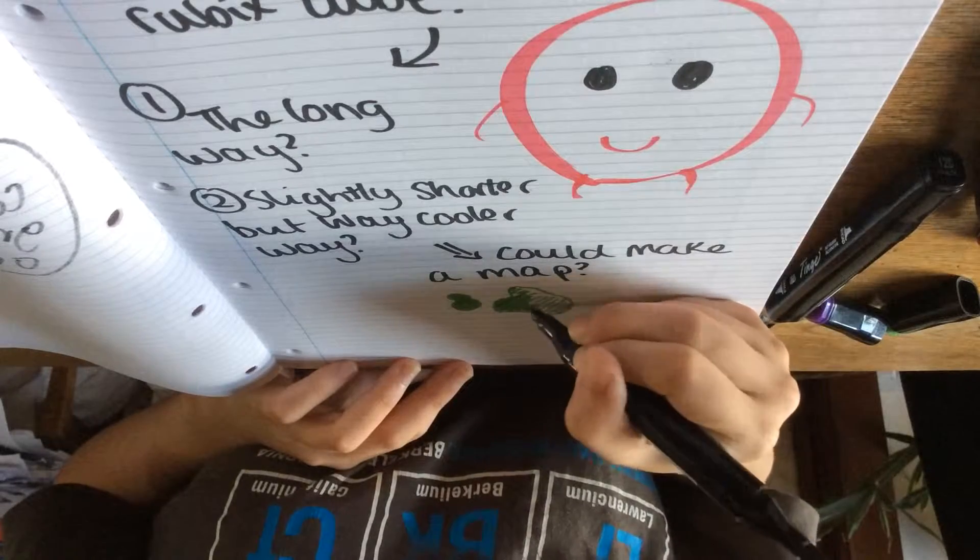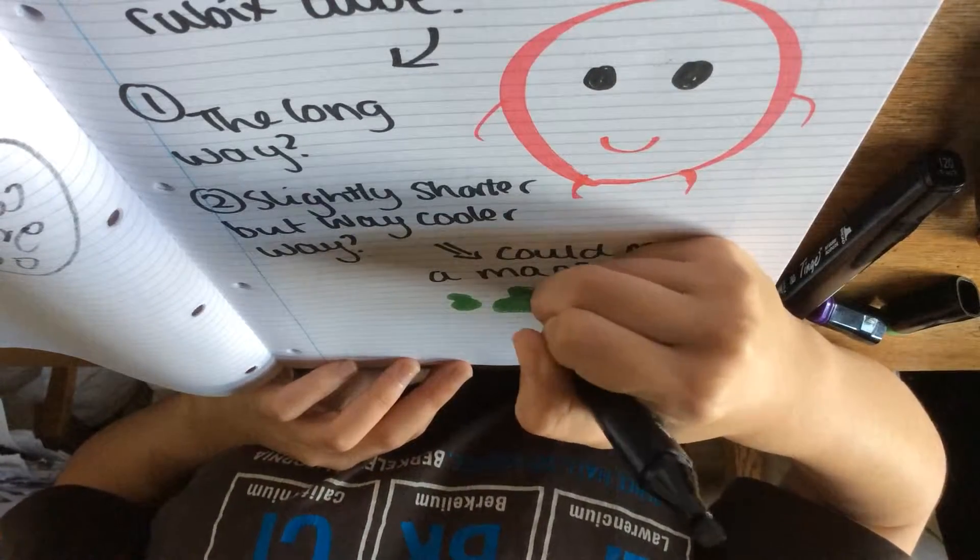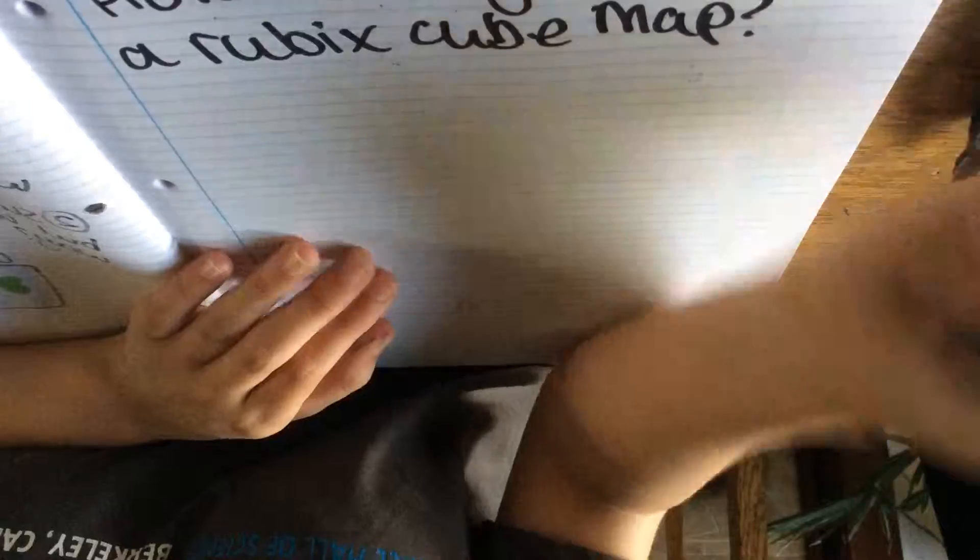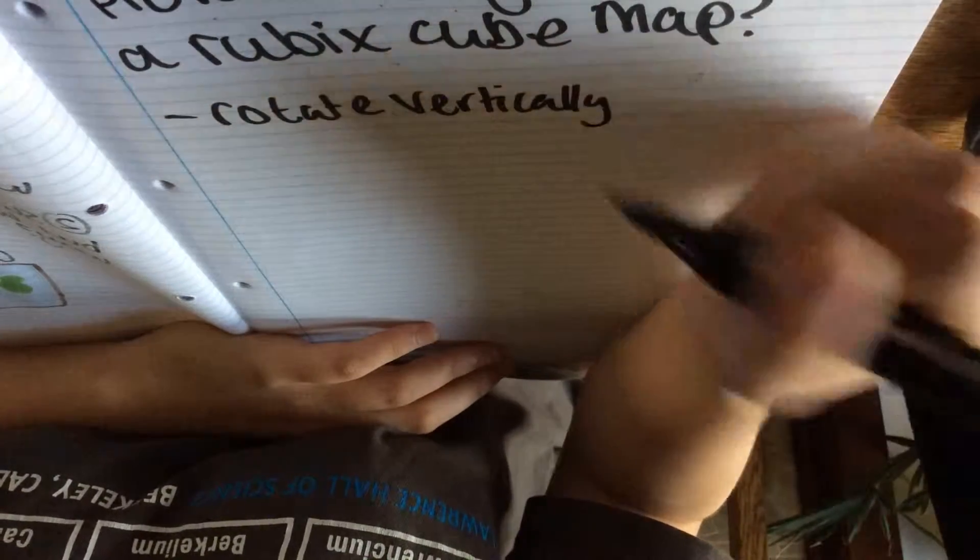Or, you could try making a map. Yes, maybe a map would work. How would you make a Rubik's Cube map, though? Well, I guess you could note down what moves you were doing.